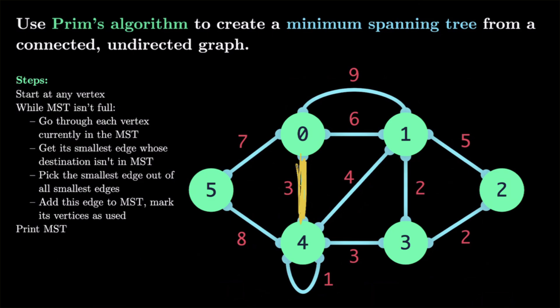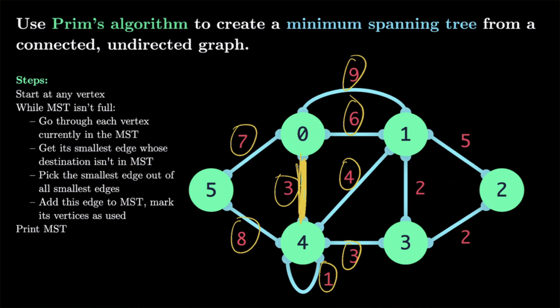Now we go through the smallest edges for each of these vertices. From 0 we consider edges of cost 6, 9, and 7, and from 4 we consider edges of cost 1, 3, 4, 3, and 8. The edge between 0 and 4 is already used, so it's out. We also disregard self-loops since our MST shouldn't repeat vertices. The next smallest edge is this one, so we add that vertex, giving us vertices 0, 3, and 4.